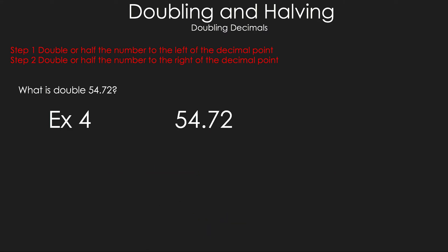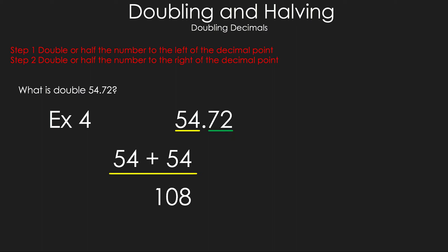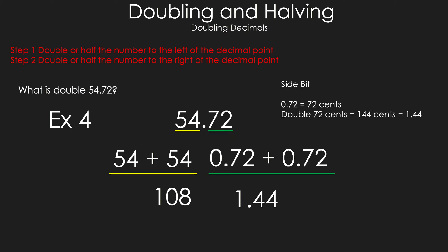The last doubling example: we have 54 and 72 hundredths. Separate them, add 54 to itself to get 108. Then add 72 hundredths to itself: 72 cents doubled is 144 cents, which equals 1.44. Combining 108 and 1.44 gives a final answer of 109 and 44 hundredths.